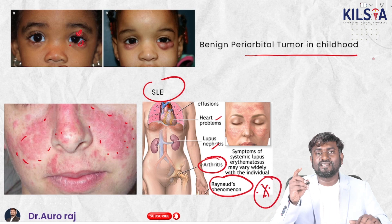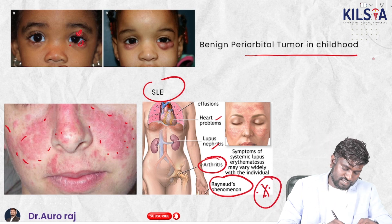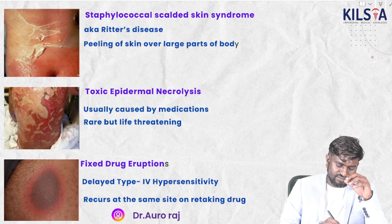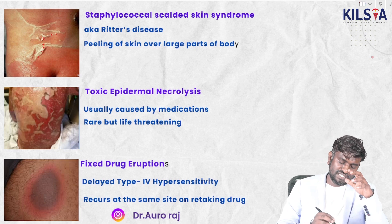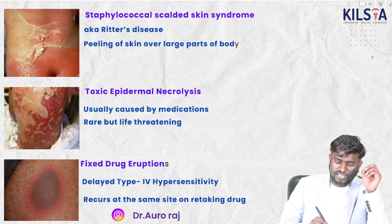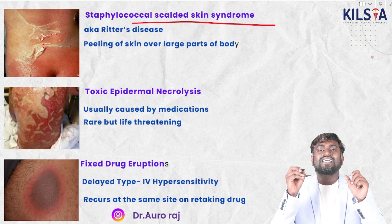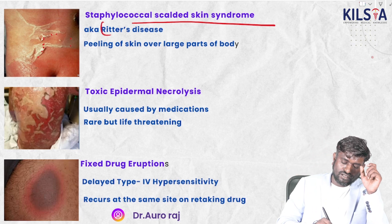The butterfly rash in SLE is also called the malar rash. This image shows peeling of the skin, seen especially over large portions of the body. This is caused by Staphylococcus and is called staphylococcal scalded skin syndrome (SSSS).